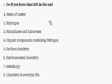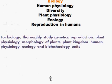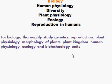If you have time left at the end, you can also do: States of Matter, Hydrogen, Haloalkanes and Haloarenes, Organic Compounds Containing Nitrogen, Surface Chemistry, Environmental Chemistry, Metallurgy, and Chemistry in Everyday Life. For Biology, you should truly study Genetics, Reproduction, Plant Physiology, Morphology of Plants, Plant Kingdom, Human Physiology, Ecology, and Biotechnology units.